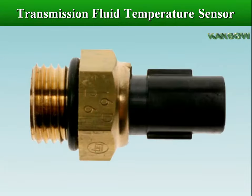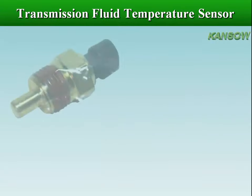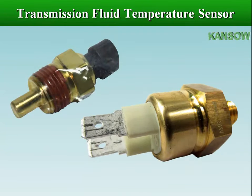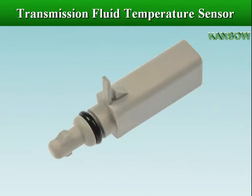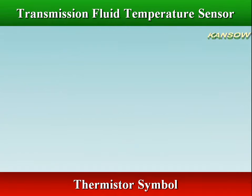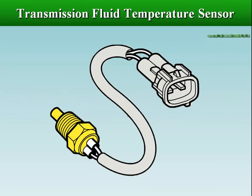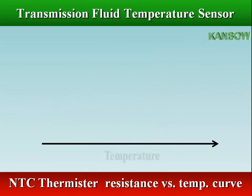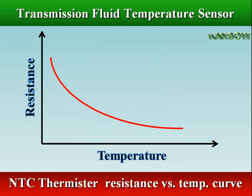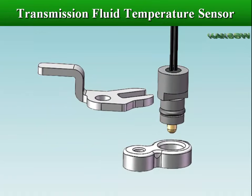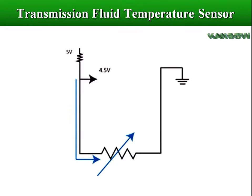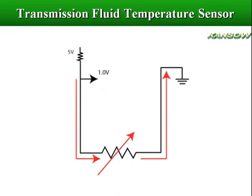Transmission fluid temperature sensors monitor the temperature of transmission fluid and provide feedback to prevent overheating, which can cause performance and reliability issues. The transmission fluid temperature sensor uses a thermistor — most are negative temperature coefficient (NTC), meaning the sensor's resistance decreases as the fluid's temperature increases. The TCM supplies a 5-volt reference voltage to the sensor, and the output voltage changes when the transmission fluid temperature varies.